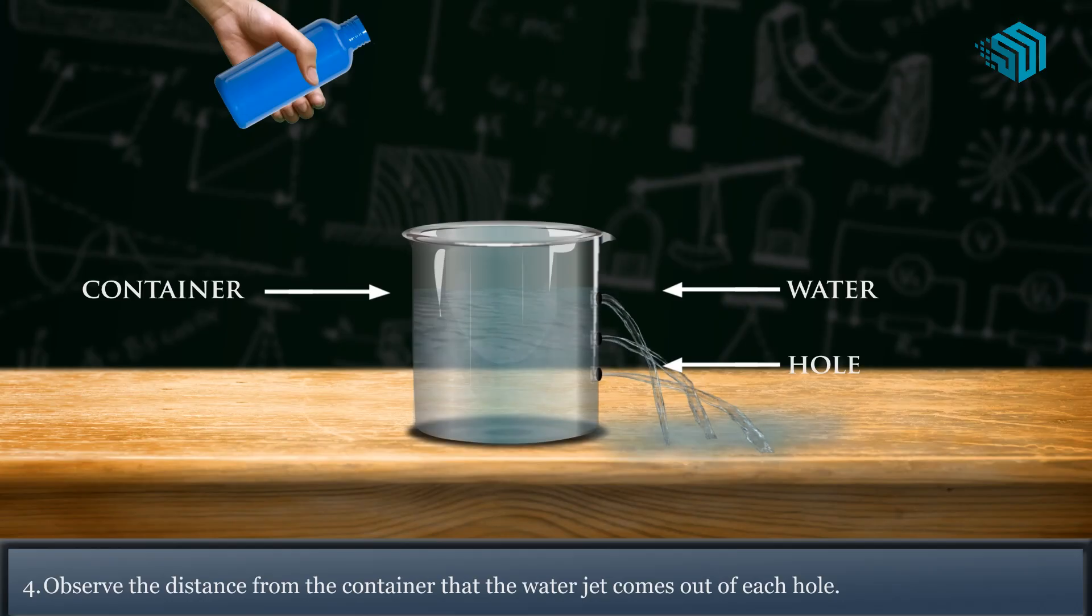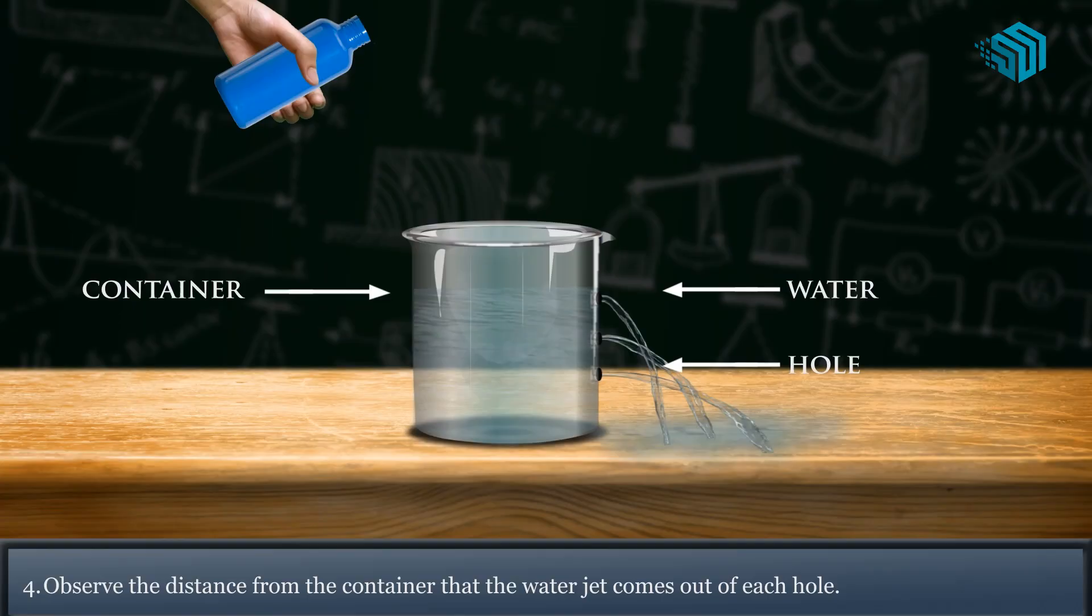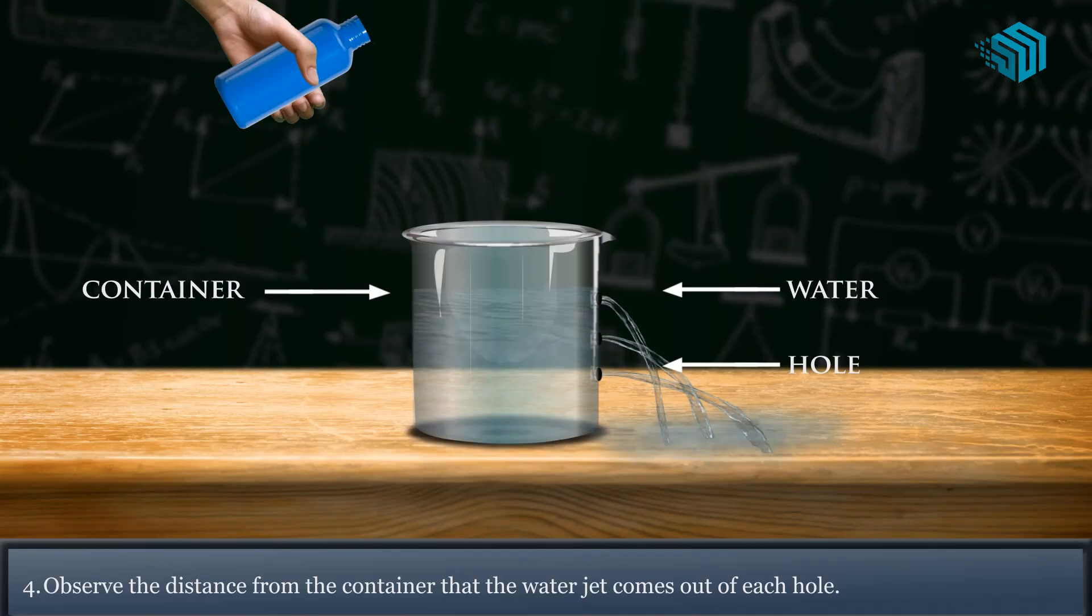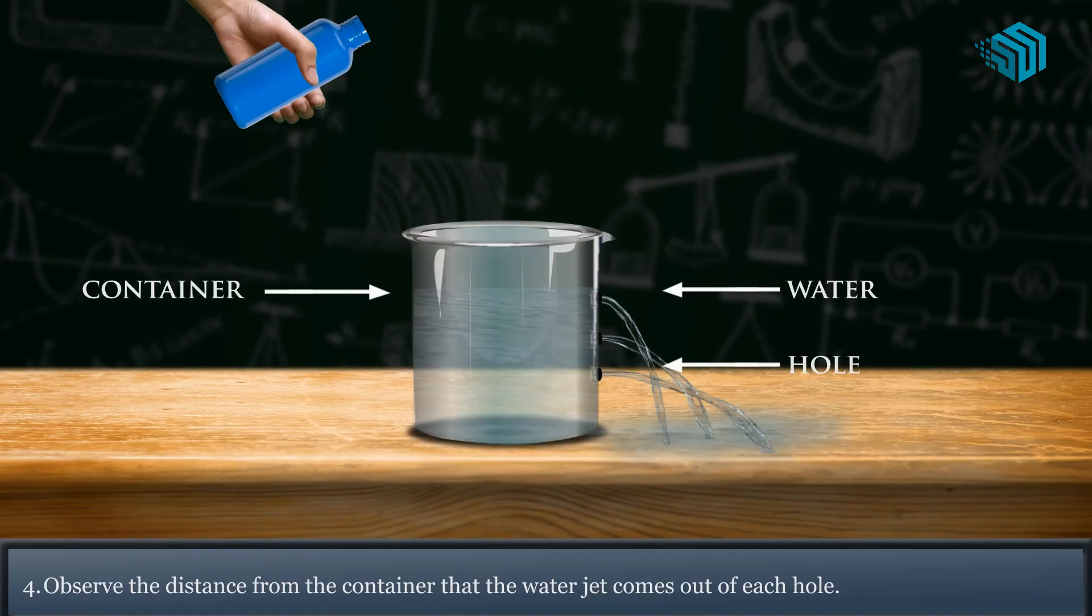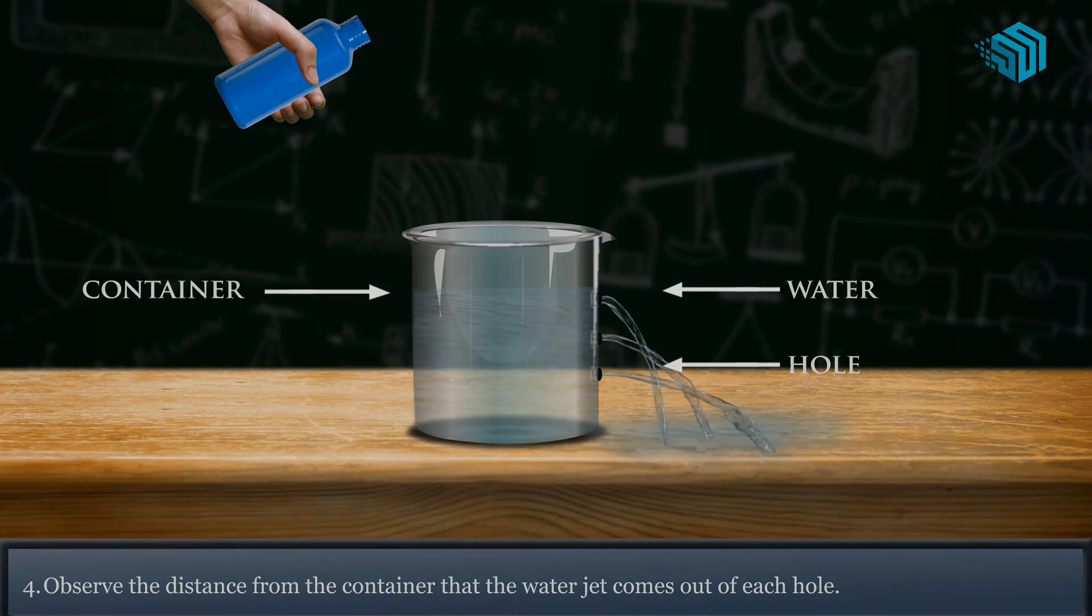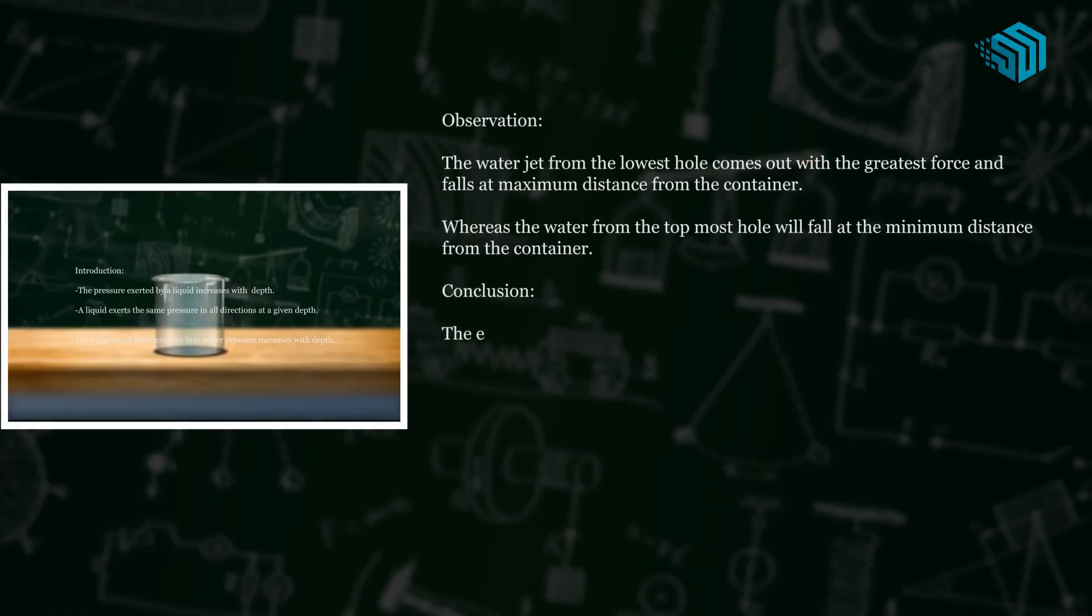Number 4. We get to observe that the water jet from the lowest hole comes out with great force and falls at the maximum distance from the container, whereas the water from the topmost hole will fall at a minimum distance from the container.